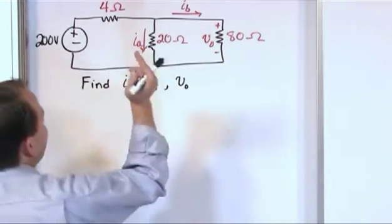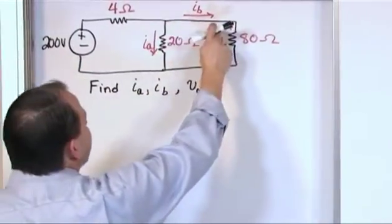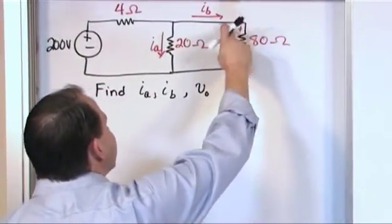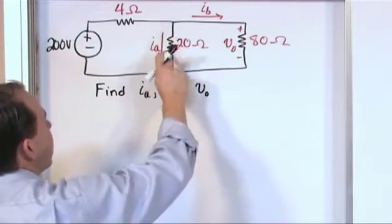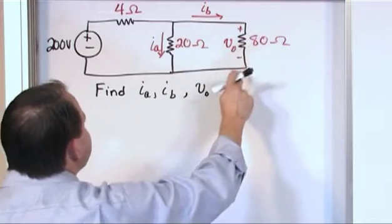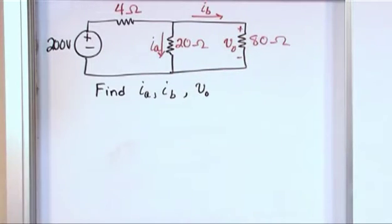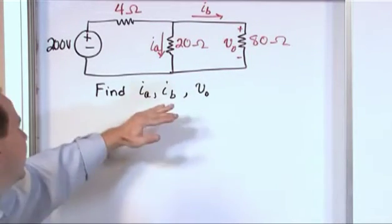Here we have pre-labeled Ia going here, Ib going here, voltage drop across this resistor is called V naught, and we're trying to find these. We're trying to find the value of this current, the value of this current, and the value of this voltage. That's all we care about. We don't care about anything else in the circuit, that's what we're trying to find.